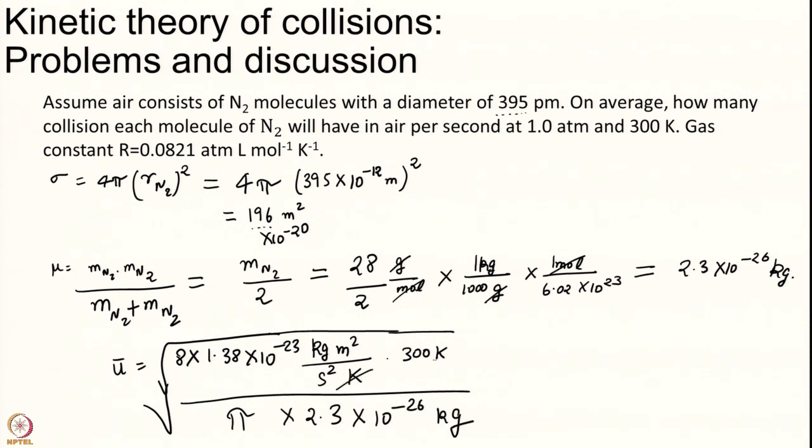And the mass I have found is 2.3 into 10 to the power of minus 26 kilogram. Kelvin cancels with Kelvin, kilogram cancels with kilogram and I will get square root of meter square per second square which is same as meters per second. This I can again plug it on a calculator and I get it as 677 meters per second.